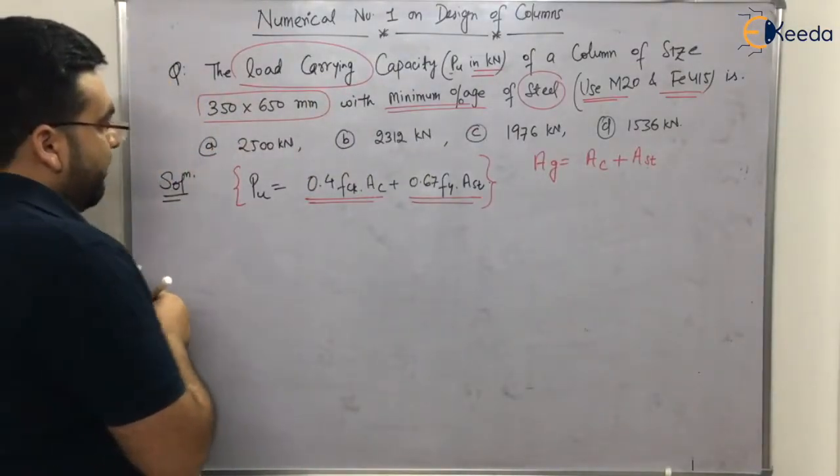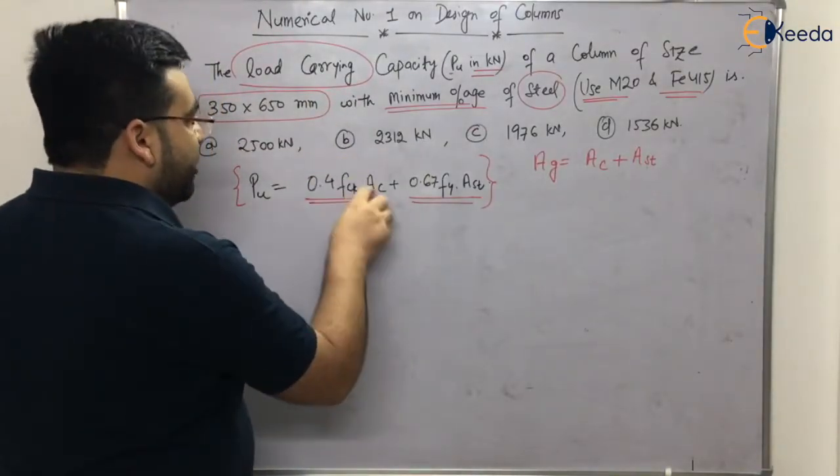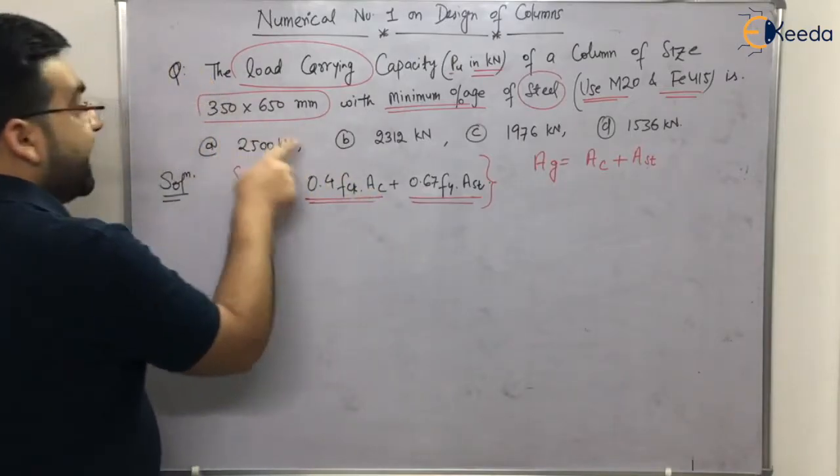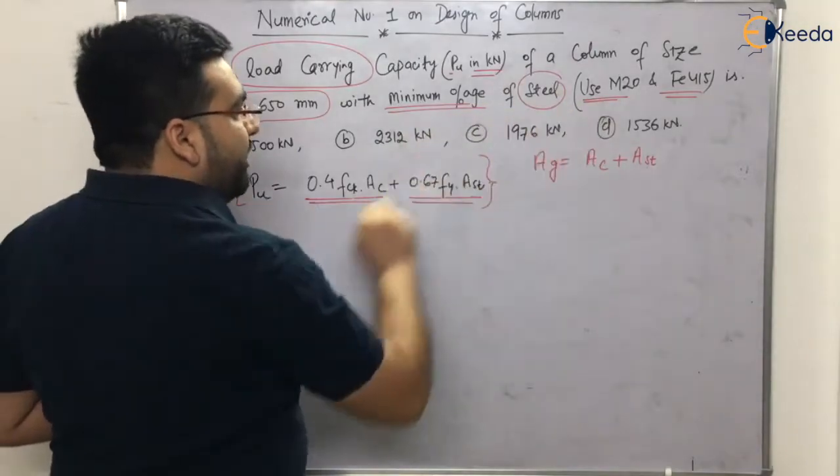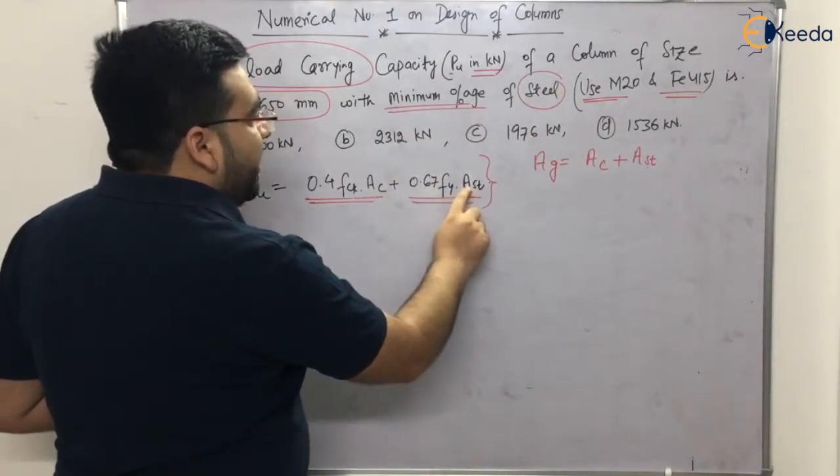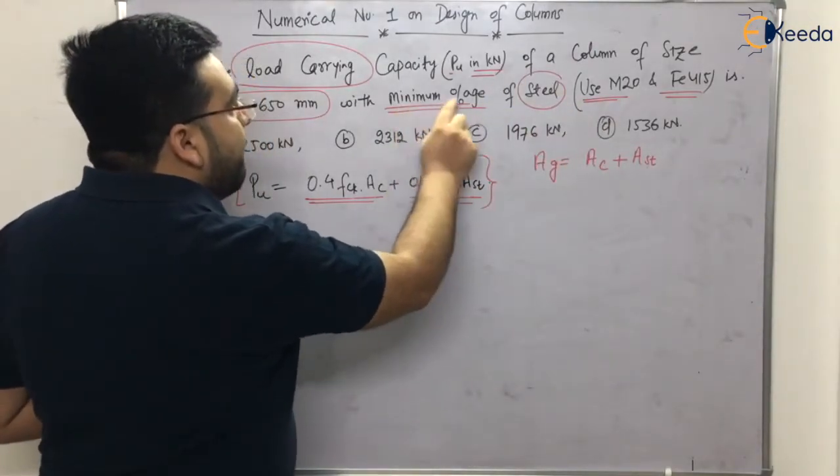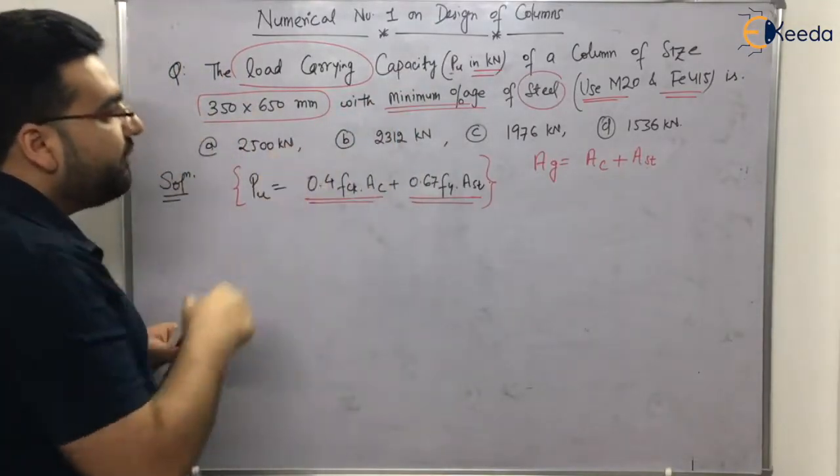Now let us see what is given. 0.4 constant, FCK is given. Area of concrete is not given. 0.67 constant, FY is given, FE 415. AST can be determined by using minimum percentage of steel. So first of all, let us calculate AST.